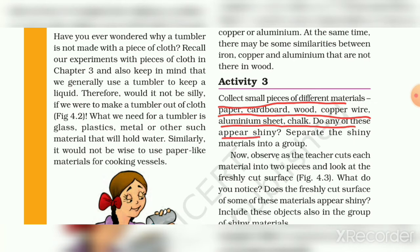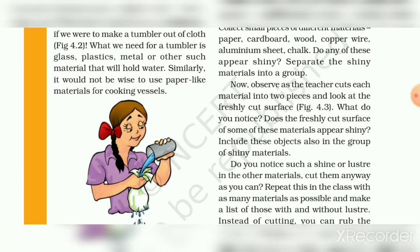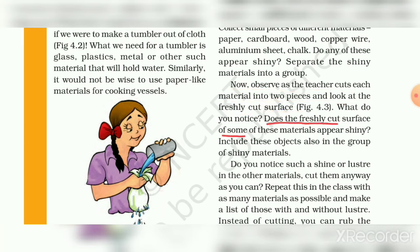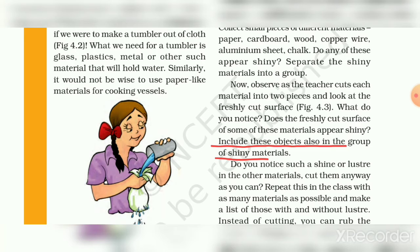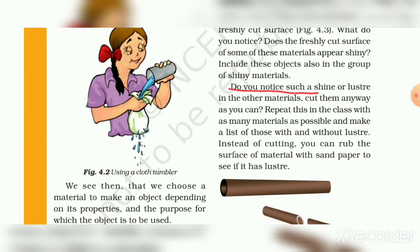Here we have cardboard, wood, copper wire, aluminum sheet, and chunk. Separate the shiny materials into groups. Now observe as the teacher cuts each material into two pieces and looks at the freshly cut surface (Figure 4.2). Just the freshly cut surface of some of these materials appears shiny. Notice which materials are shiny or lustrous, and include them in the group of shiny materials — dividing materials as shiny or non-shiny.